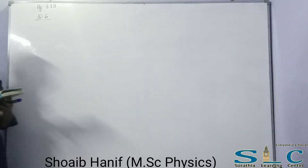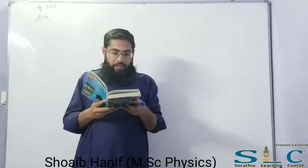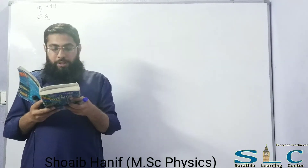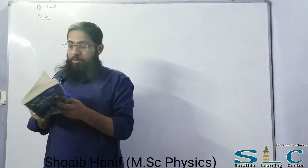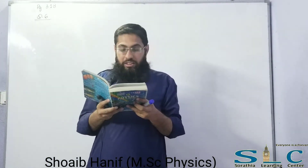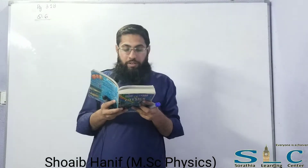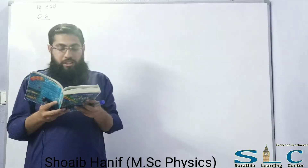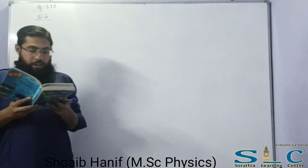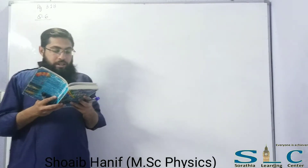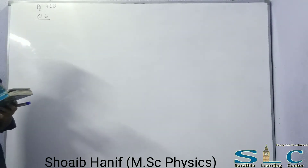Question number 6, related to the diffraction grating, page number 318, chapter number 9. If a diffraction grating produces a first order spectrum of light of wavelength 6×10⁻⁷ meter at an angle of 20 degrees from the normal, what is its spacing and also calculate the number of lines per millimeter?